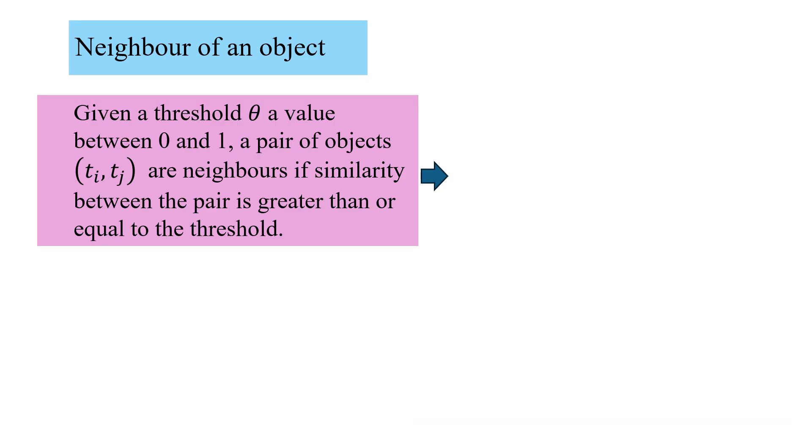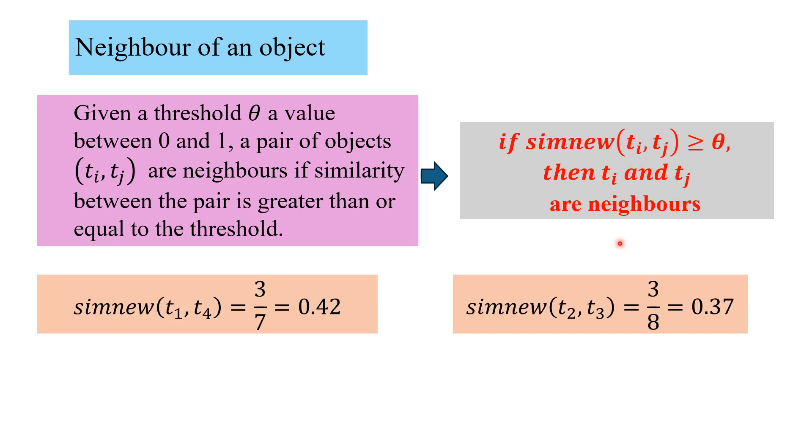Now we discuss the concept of neighbor of an object. We take a threshold value theta, and a pair of objects (ti, tj) are neighbors if similarity between the pair is greater than or equal to the threshold. We first discussed the similarity measure, now we are coming to the concept of neighbor. Slowly we are building on the base so that we can discuss the ROCK algorithm. If sim nu (ti, tj) is greater than equal to theta, then ti, tj are neighbors.